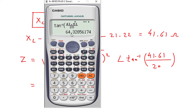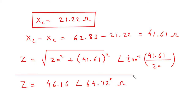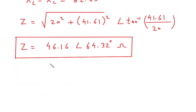Solving this, the magnitude of Z is 46.16 Ohm and the angle is 64.32 degrees. Since it is impedance, its unit will be Ohm. From this impedance calculation, we have also found the value of angle phi, which is equal to 64.32 degrees.